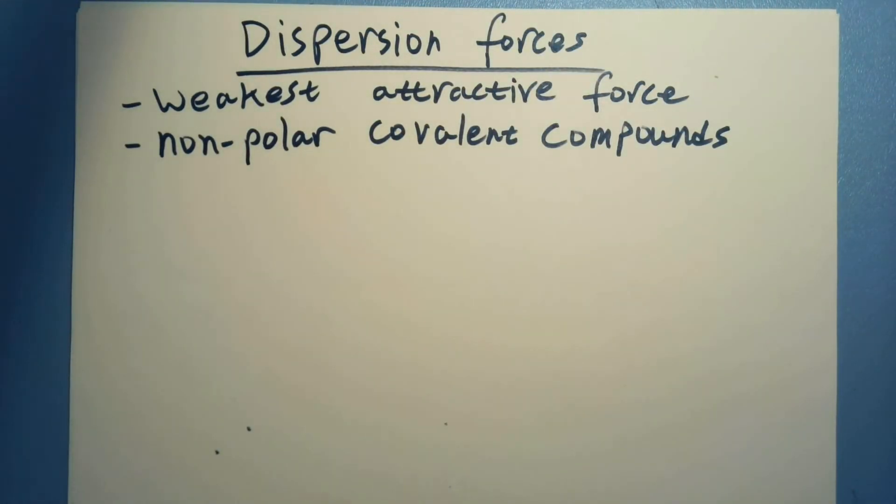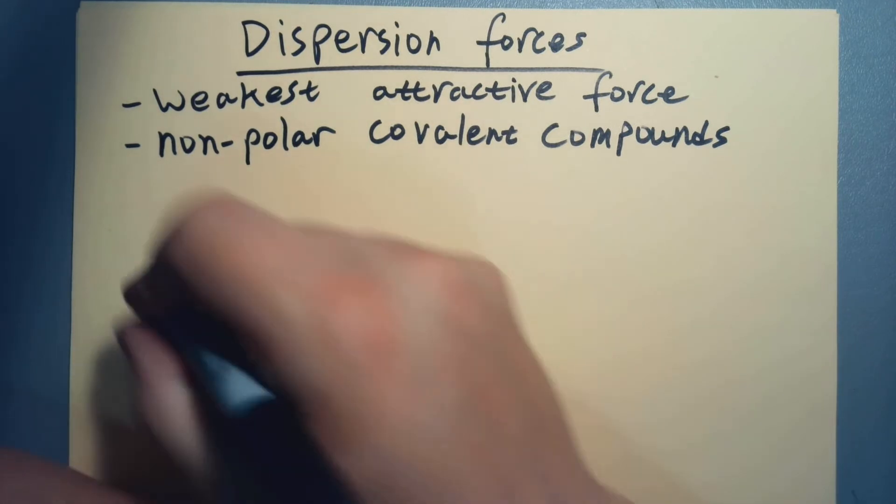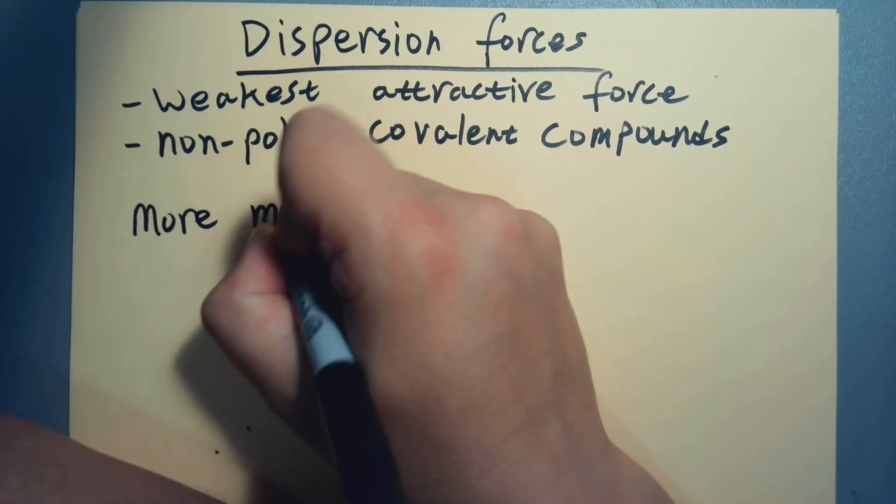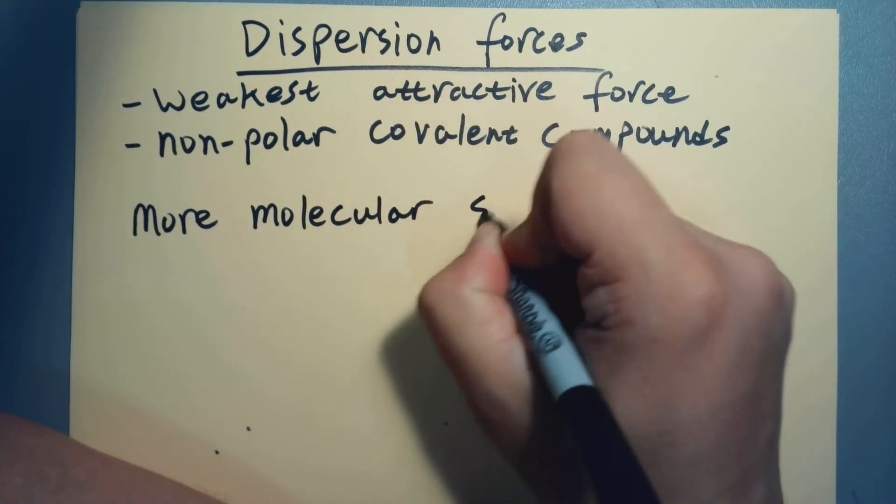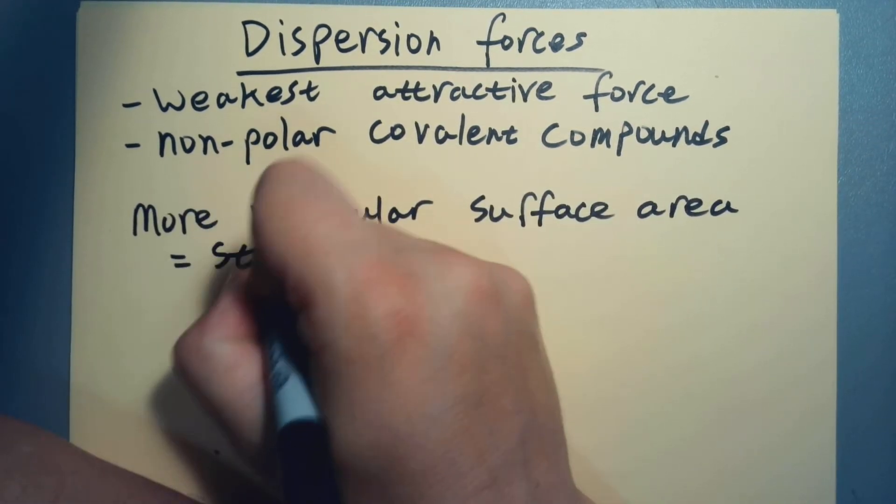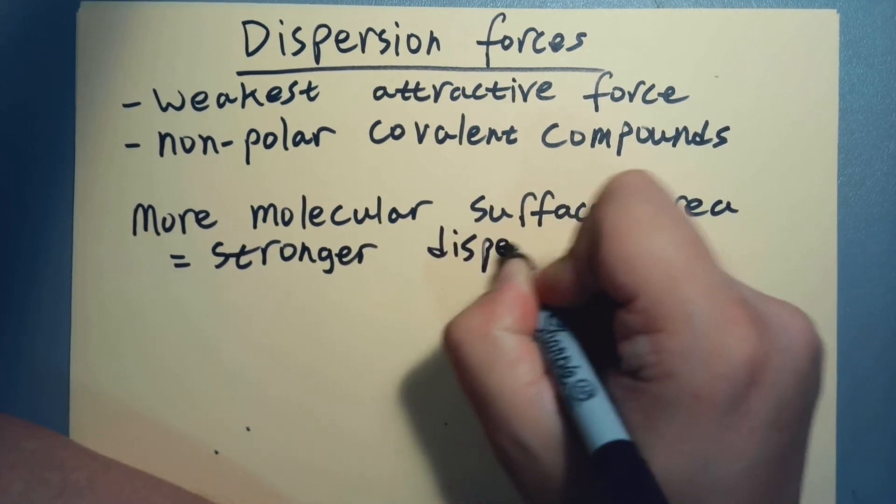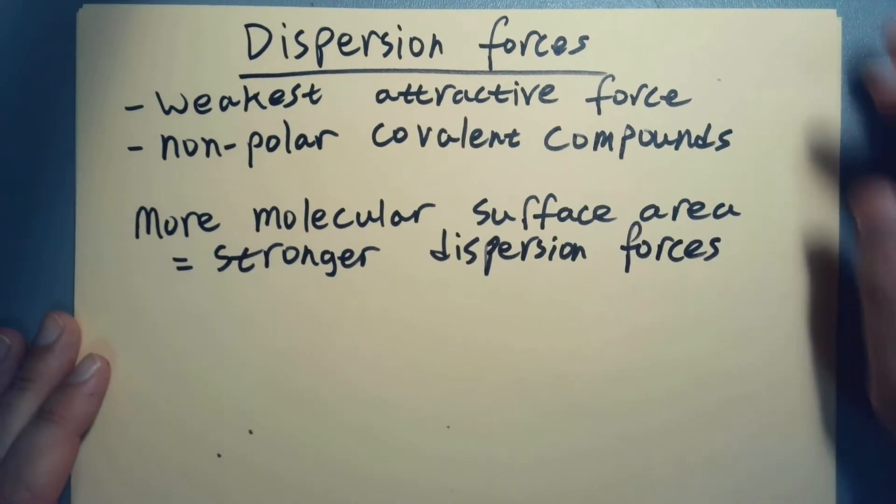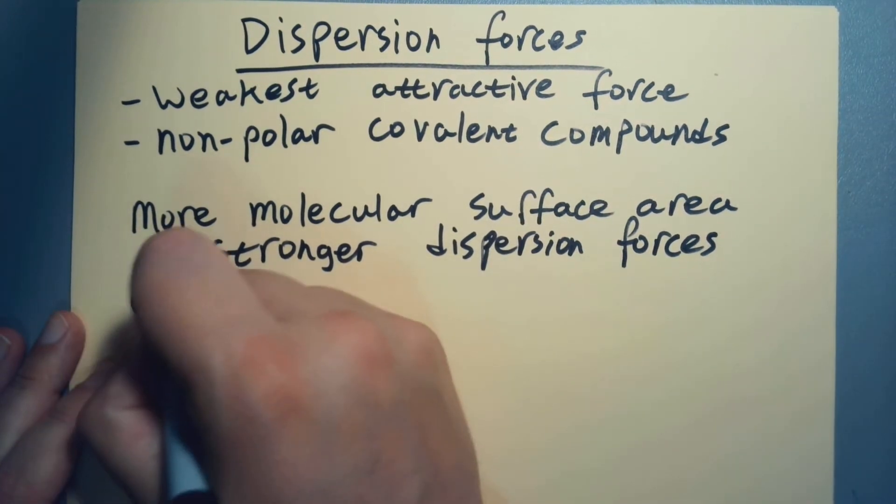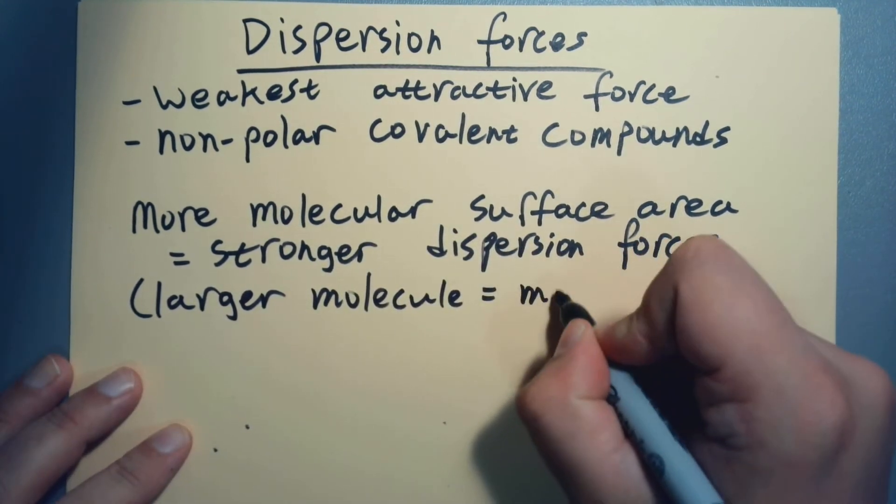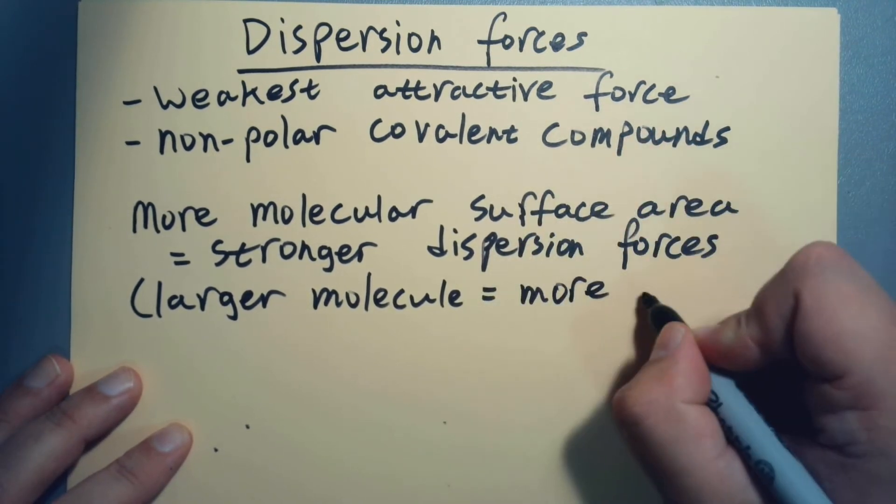So only non-polar compounds. And what it really breaks down to for a tiebreaker—if you have two non-polar molecules, more molecular surface area equals stronger dispersion forces. Basically, larger molecule equals more surface area.